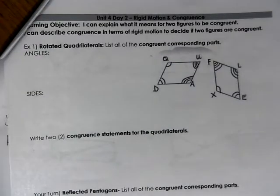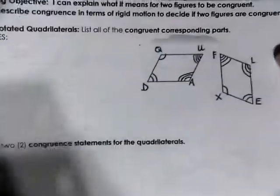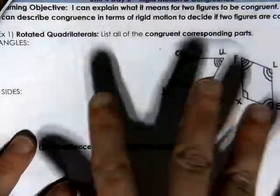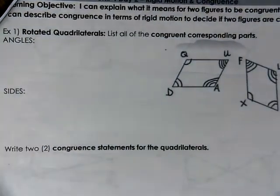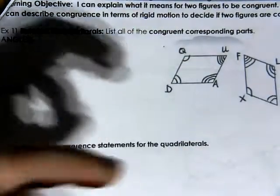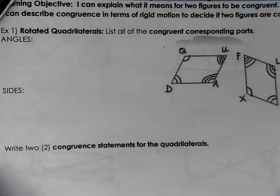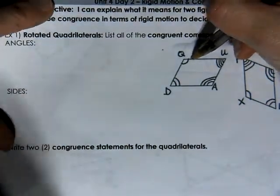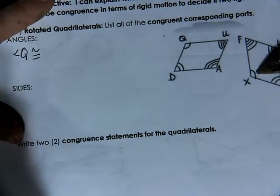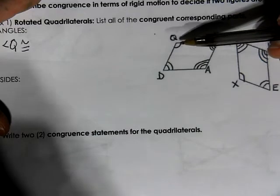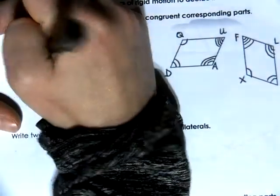Let's do a few examples. In example number one, we have rotated quadrilaterals — meaning these two quadrilaterals are the same shape, just with a different orientation. We want to analyze the picture and list all of the congruent corresponding parts. It's all about matching arc marks and tick marks. Starting with letter Q: angle Q has one arc mark, so angle Q is congruent to angle X.